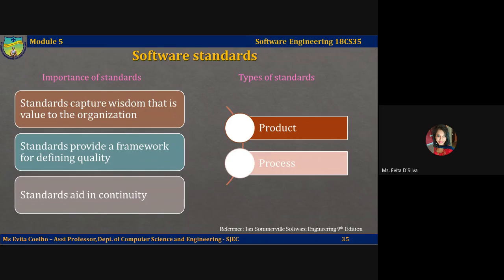Software standards are important for three reasons. Standards capture wisdom that is of value to the organization. They are based on knowledge about the best or most appropriate practice for the company. This knowledge is often only acquired after a great deal of trial and error. Building it into a standard helps the company reuse this experience and avoid making mistakes made previously.